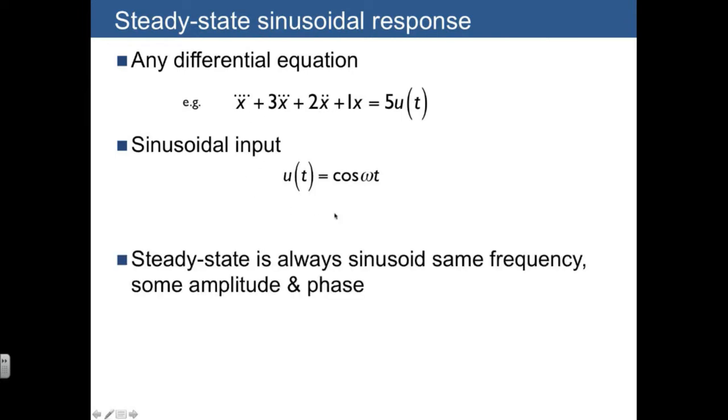The thing to remember about all cases is that the steady state solution is always going to be another sinusoid at the same frequency as the one we started with and some amplitude and some phase. So the general particular solution can be written as m cosine omega t plus phi, where m is the amplitude and phi is the phase.